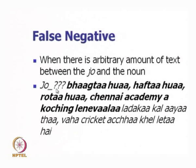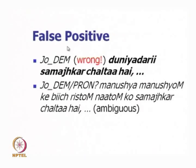This is a case of false negative — the rule is saying most probably the tag is not DEM and is failing, which is undesirable. There can also be cases of false positive. For example, 'Jo dunyadari samajh kar chalta hai, usse tarakki milti hai' — one who understands the ways of the world achieves success. In this case if we place the demonstrative tag it will go wrong, because the rule says if Jo is followed by a noun — 'dunyadari' is a noun — so it simple-mindedly places DEM and goes wrong. This is what we mean by false positive.